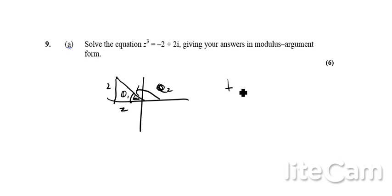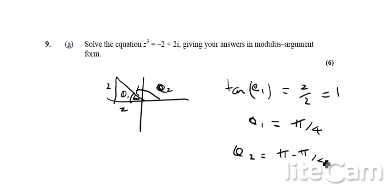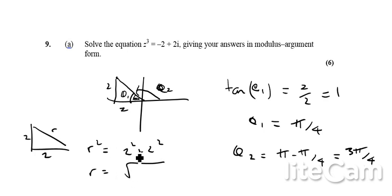So we can basically use trigonometry to work out theta, and we can work out the length of that as well. So we've got tan theta 1 is equal to 2 over 2, which is 1. So therefore, theta 1 is going to be pi over 4. Therefore, theta 2 is going to be, well, this is 180 degrees, or pi. So theta 2 is going to be pi take away pi over 4, which is going to give us 3 pi over 4. Okay, so we've worked out the argument here. Then we can also work out the modulus. Now, we can work out the modulus by using Pythagoras. If we've got that is 2 and that is 2, then this modulus here, r squared, is equal to 2 squared plus 2 squared. So therefore, r is the square root of 8.